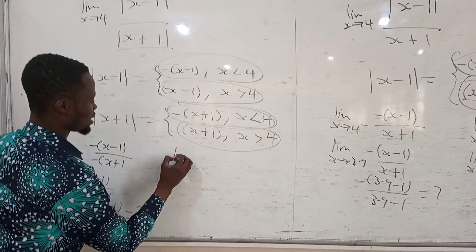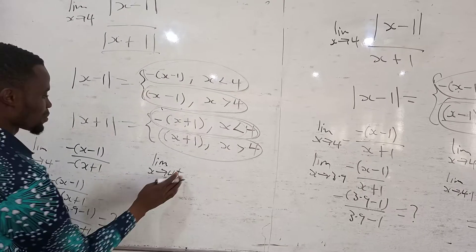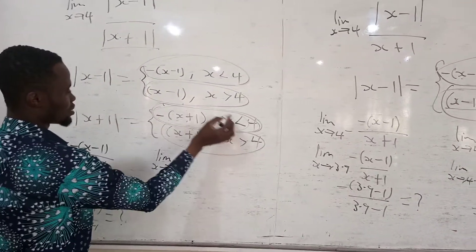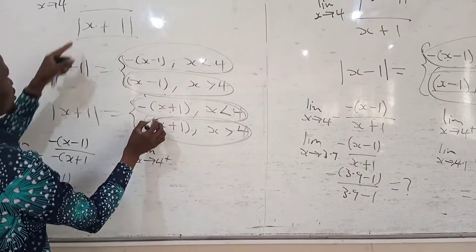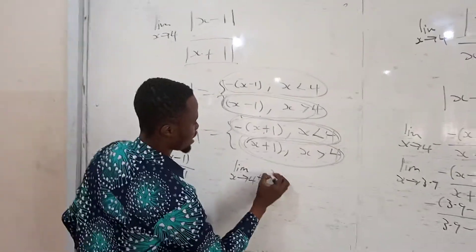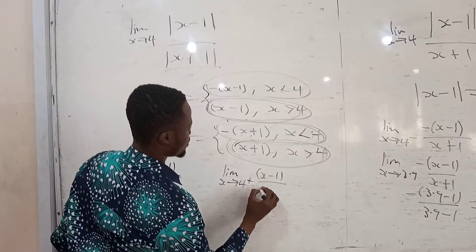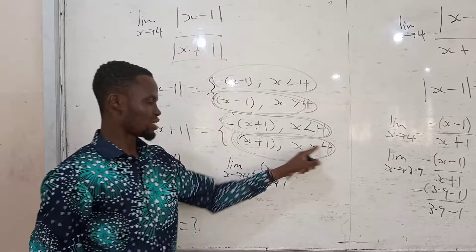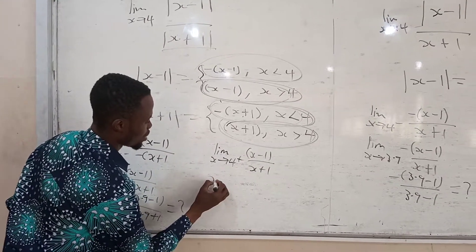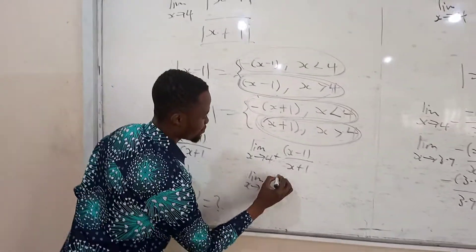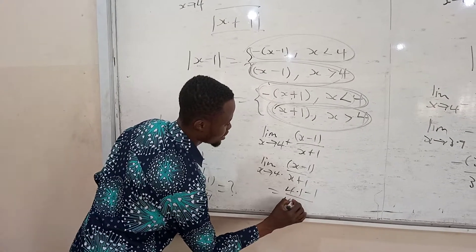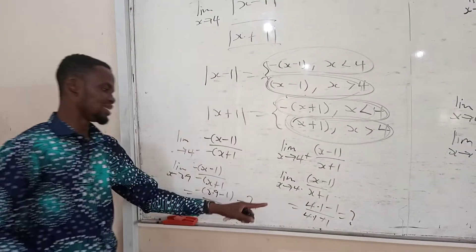For the right-hand side, the limit as x goes to four plus: in place of the numerator I substitute positive(x minus one), and the denominator is positive(x plus one). So I get (x minus 1) all divided by (x plus 1). I choose 4.1 and substitute: (4.1 minus 1) all divided by (4.1 plus 1). I check my answer. If the answers are the same, the limit exists. If not, the limit does not exist.